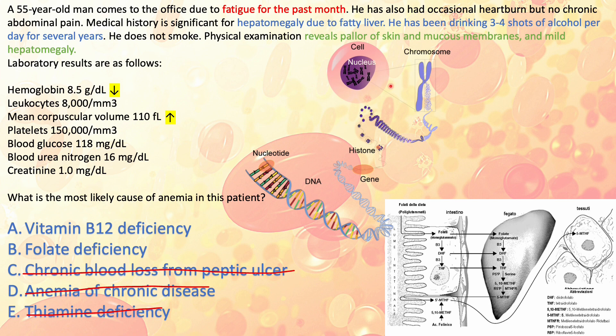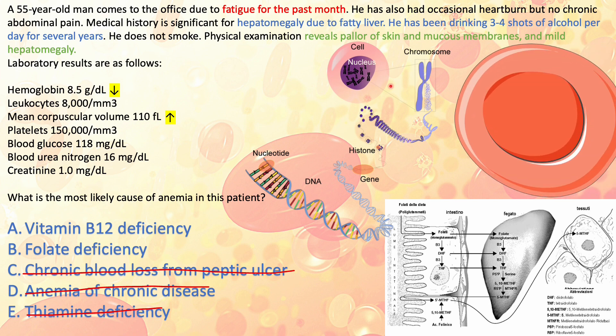Folic acid mediates pyrimidine synthesis — the nucleotides that make up the DNA of red blood cell precursors. This type of anemia is megaloblastic, meaning it doesn't just affect red blood cells but also white blood cells, which is why we see hypersegmented neutrophils. There's a hypocellular marrow, and the red blood cells are large because they didn't get the chance to divide or undergo mitosis — there wasn't enough DNA to replicate.